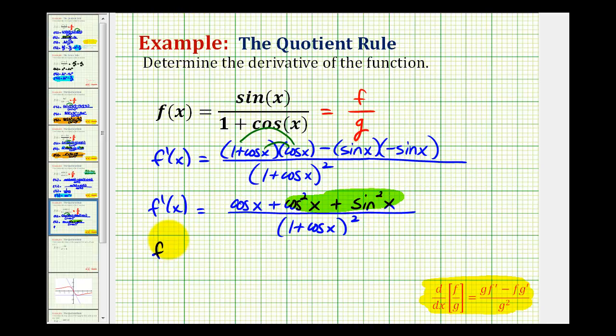So we have f prime of x is equal to, instead of writing cosine x plus one, I'm going to write one plus cosine x. All over the quantity one plus cosine x squared, which we could rewrite as one plus cosine x times one plus cosine x.